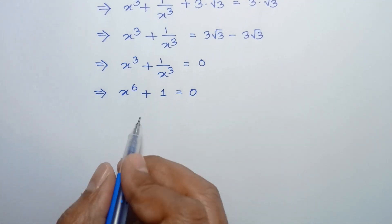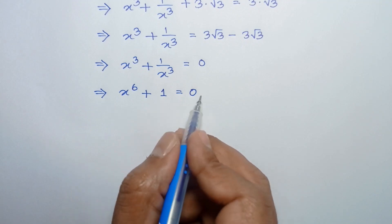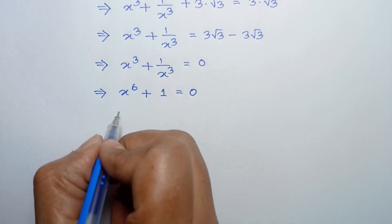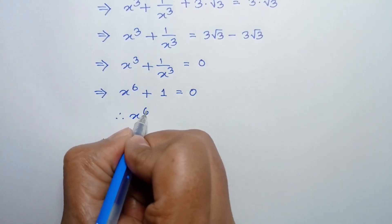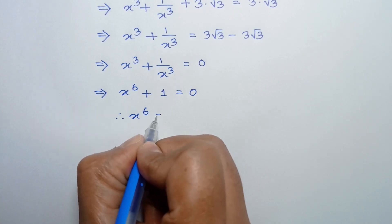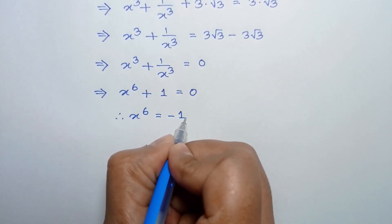Now, taking this 1 to the right side, we will have x to the power 6 is equal to negative 1.